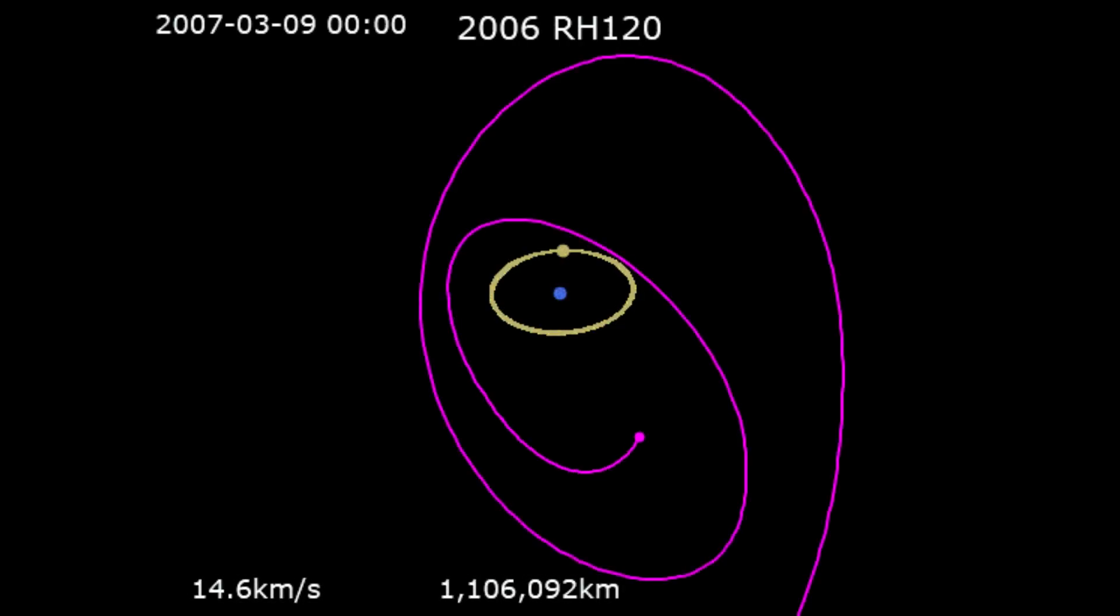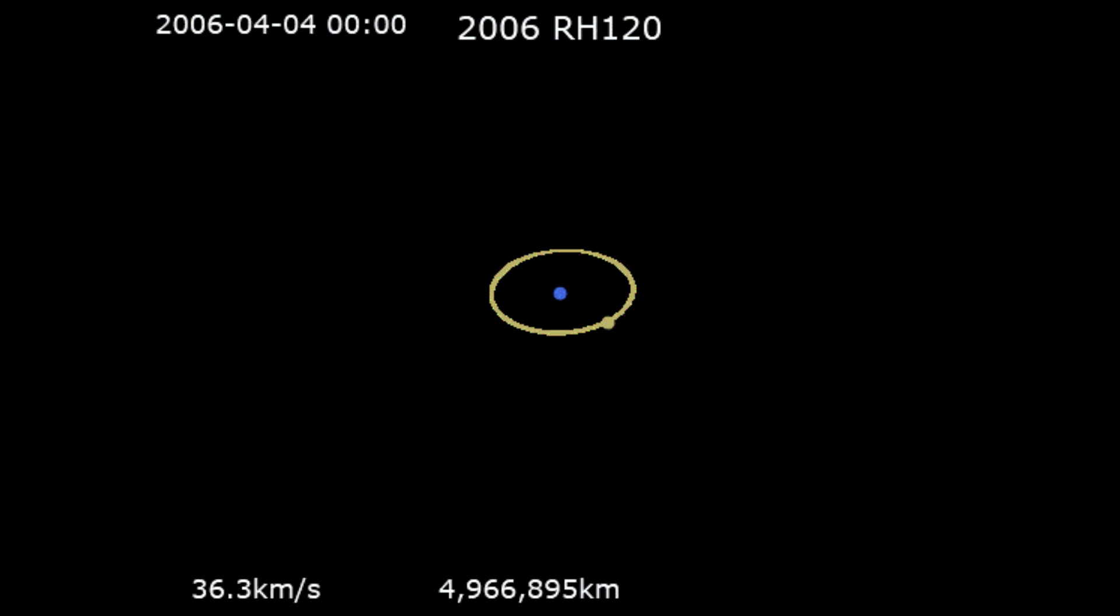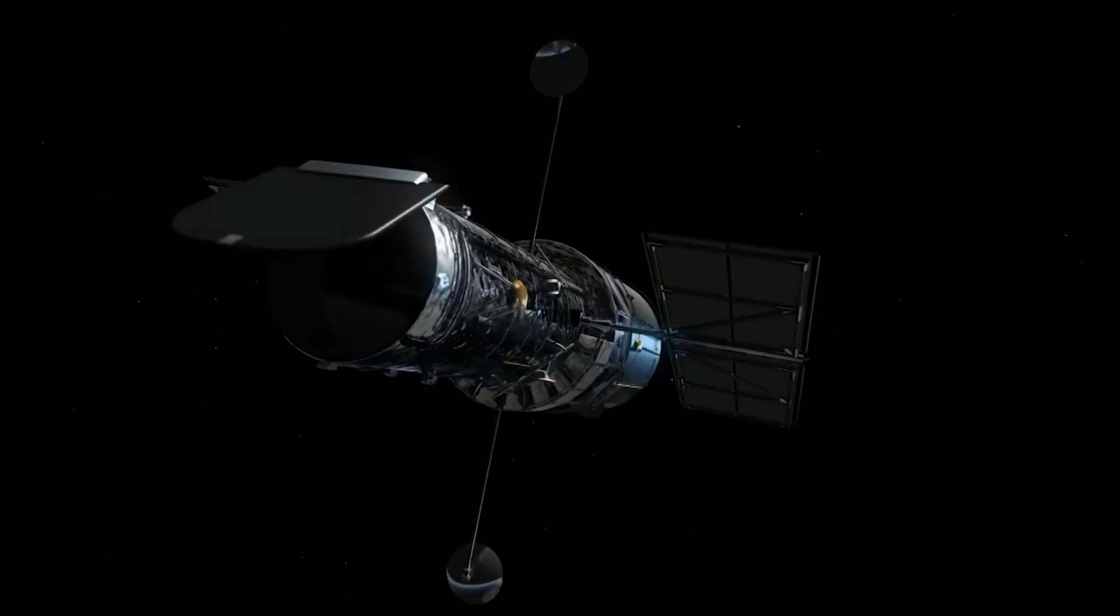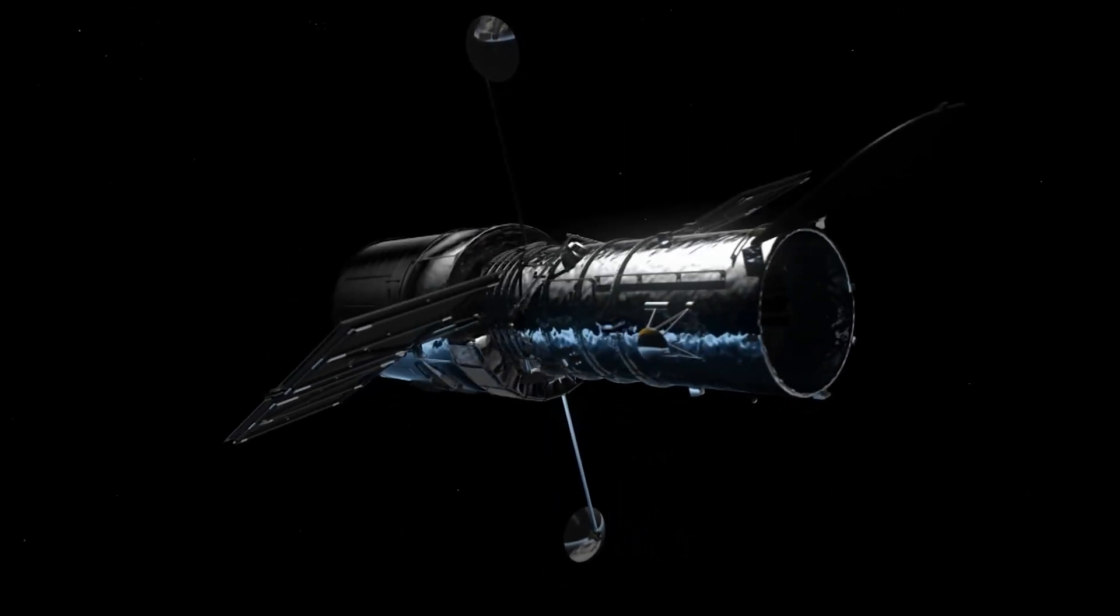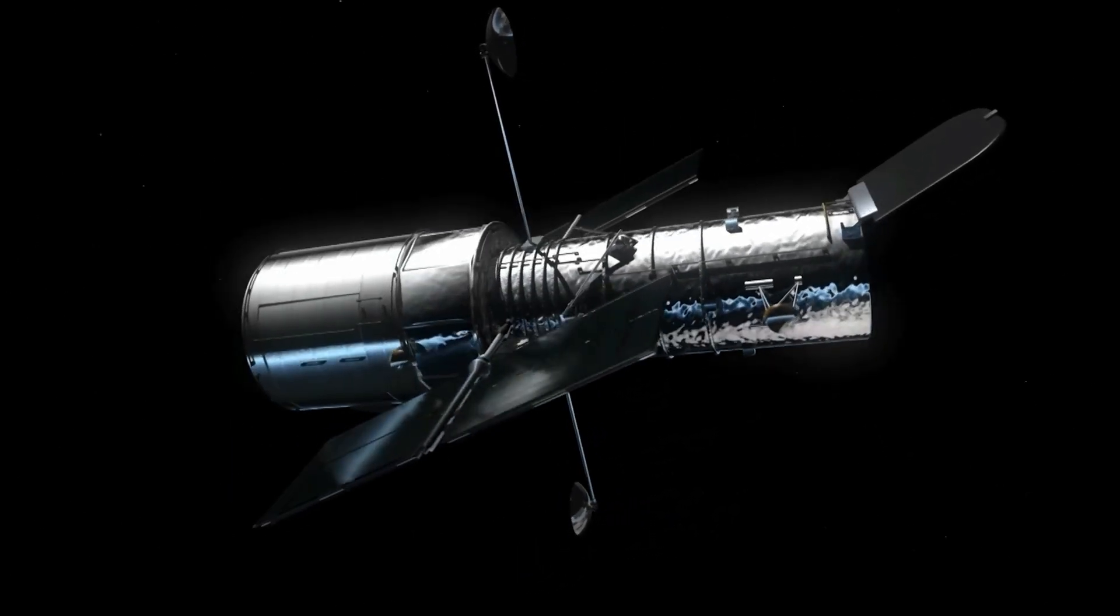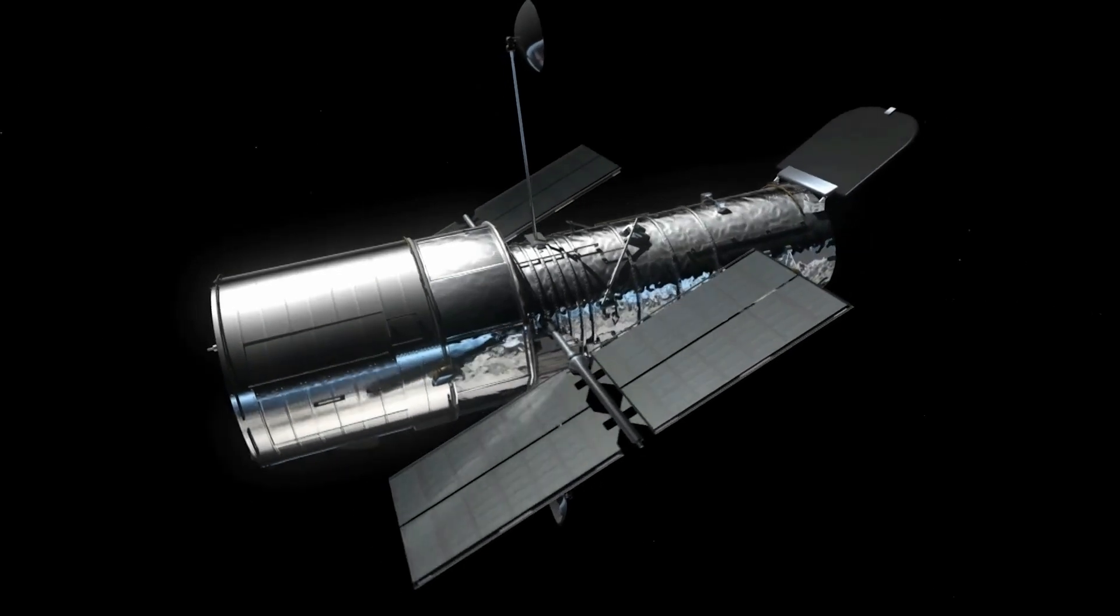Why don't we hear about mini-moons very often? Because they are very difficult to detect. They are small, they move quickly, and they don't usually stay in Earth's orbit for long. Even the most advanced telescopes have a hard time finding them, except with automated monitoring systems and clever algorithms.